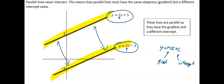So what we have shown is that parallel lines have the same gradient but different intercepts. In the first one your intercept is +5 and in the second one the intercept is −3. So parallel lines have the same gradients but different intercepts.